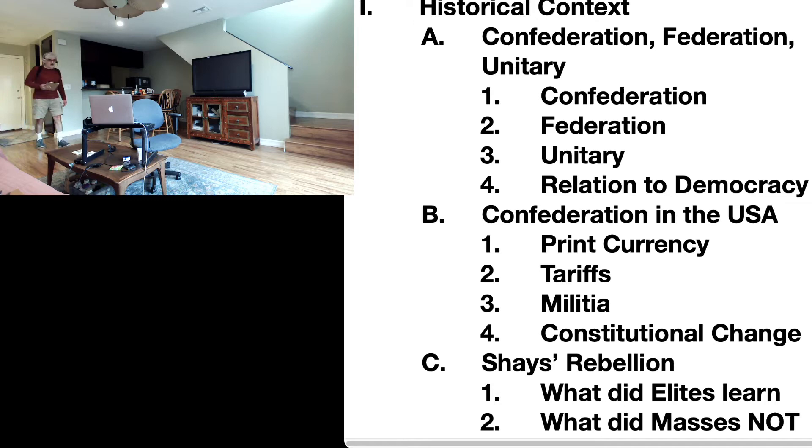Usually, the well-connected, the well-off, get deferments. They don't serve. Dick Cheney got deferments. Donald Trump allegedly had bone spurs in his heels and allegedly couldn't serve. He got deferments.